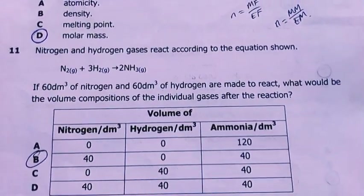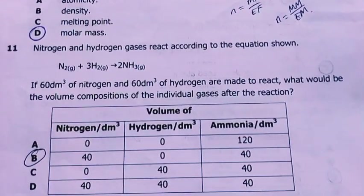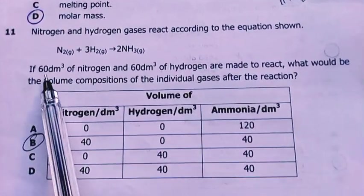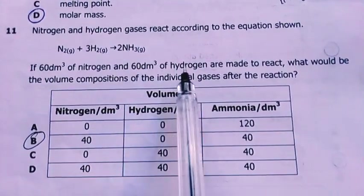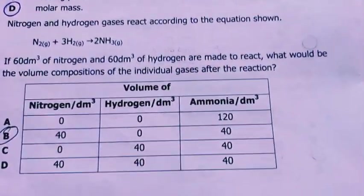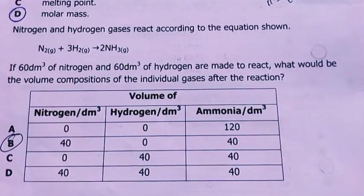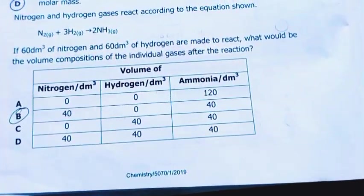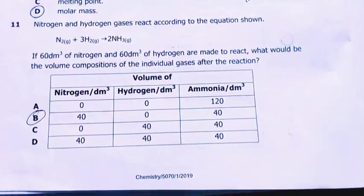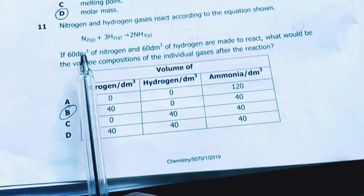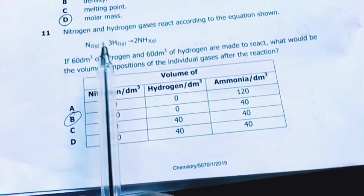Question 11. Nitrogen and hydrogen gases react according to the equation below. That's the formation of ammonia. If 60 liters of nitrogen and 60 liters of hydrogen are made to react, what would be the volume compositions of the following gases after reaction? My answer there was B. Look at the molar ratios. These molar ratios would be in line with these volume ratios here.